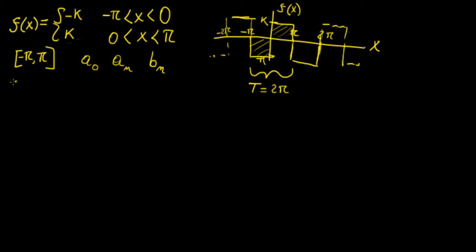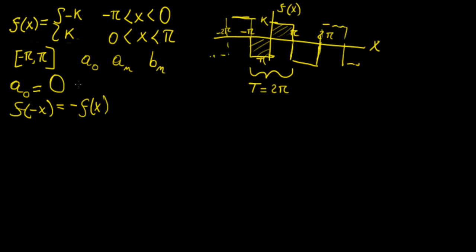We already talked about how a-naught represents the average value of the function within the interval. The interval is symmetric about the y-axis, so we can use properties such as whether the function is even or odd. This is actually an odd function because it satisfies f(−x) = −f(x). If you add the area on one side to the other you get zero, so the integral over the symmetric interval is zero — meaning a-naught equals zero without even having to integrate it.